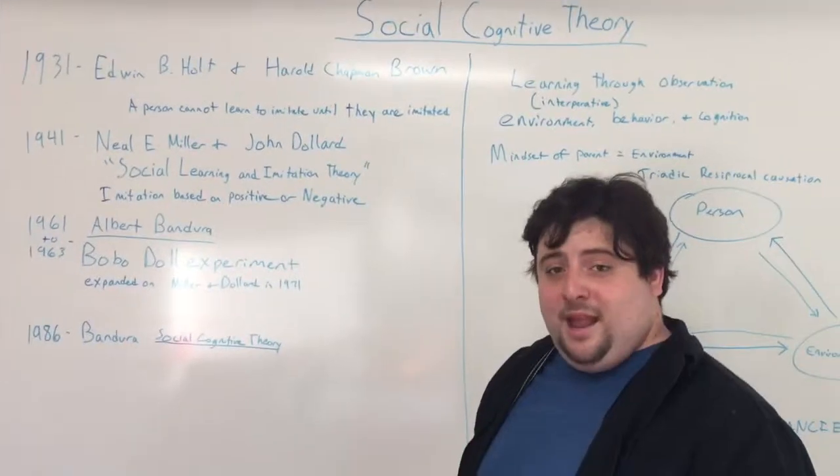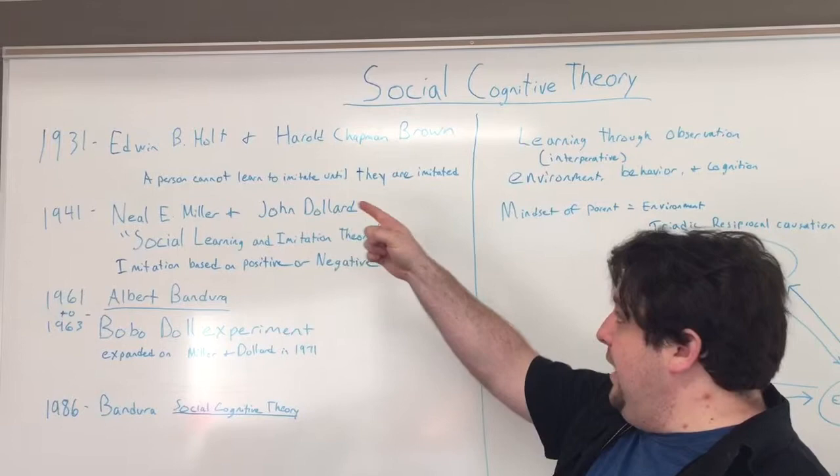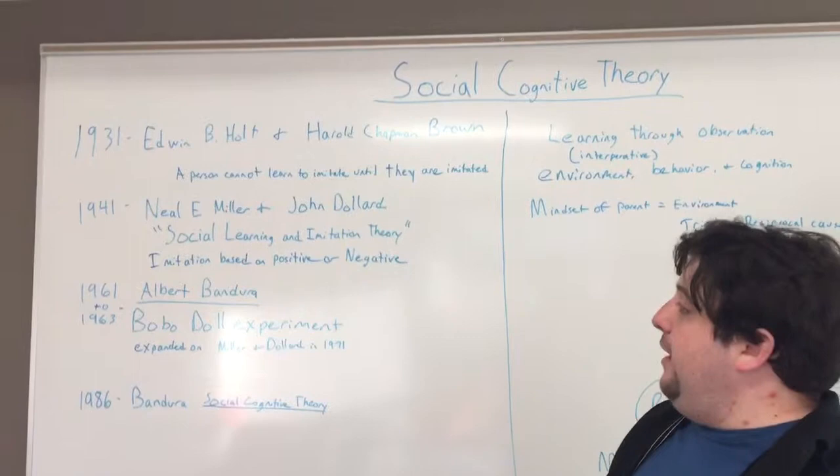Hi, I'm Patrick Malone and I'm here to discuss social cognitive theory. Social cognitive theory traces its roots back to 1931 when Edward B. Holt and Harold Chapman Brown wrote an article based on animal behavior describing that a person cannot learn to imitate unless imitated.